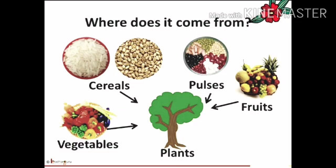And after attaining their full growth with the help of this food that is prepared by them, they produce some materials like cereals, pulses, fruits, vegetables, etc., and all these materials are used by us as our food.